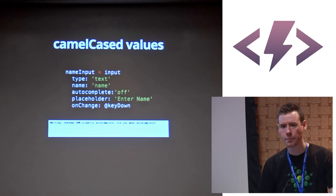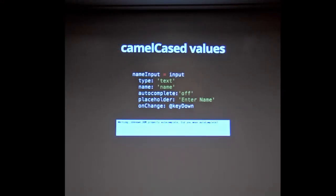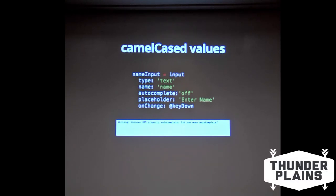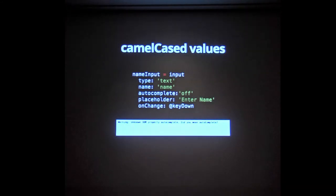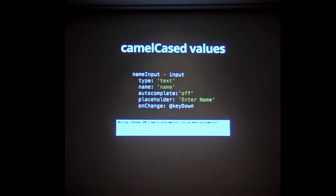Another gotcha: certain things like autocomplete are camelCased because it's a virtual DOM and they don't want to override anything. Things with dashes are generally camelCased in React. If you type autocomplete=off like pure HTML, it won't work — React expects autoComplete camelCased.